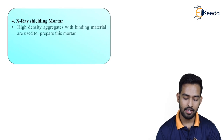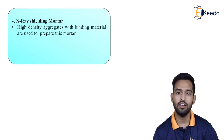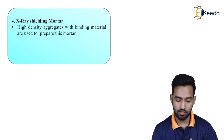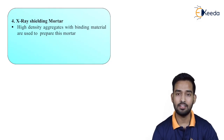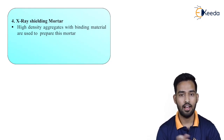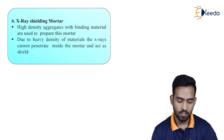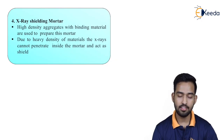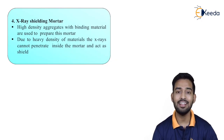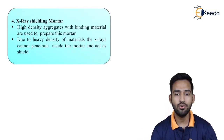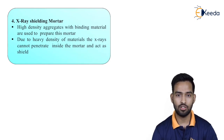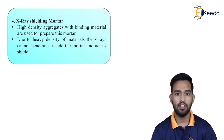Last is x-ray shielding mortar, generally used for x-ray rooms. High density aggregates with binding material are used to prepare this mortar. Due to the heavy density of the materials, x-rays cannot penetrate inside the mortar and it acts as a shield. These are generally useful in hospitals where we design x-ray rooms. In this video, we have discussed different types of mortars, their applications, their materials, and some special types of mortars — how they are useful and how they are prepared. Thank you.